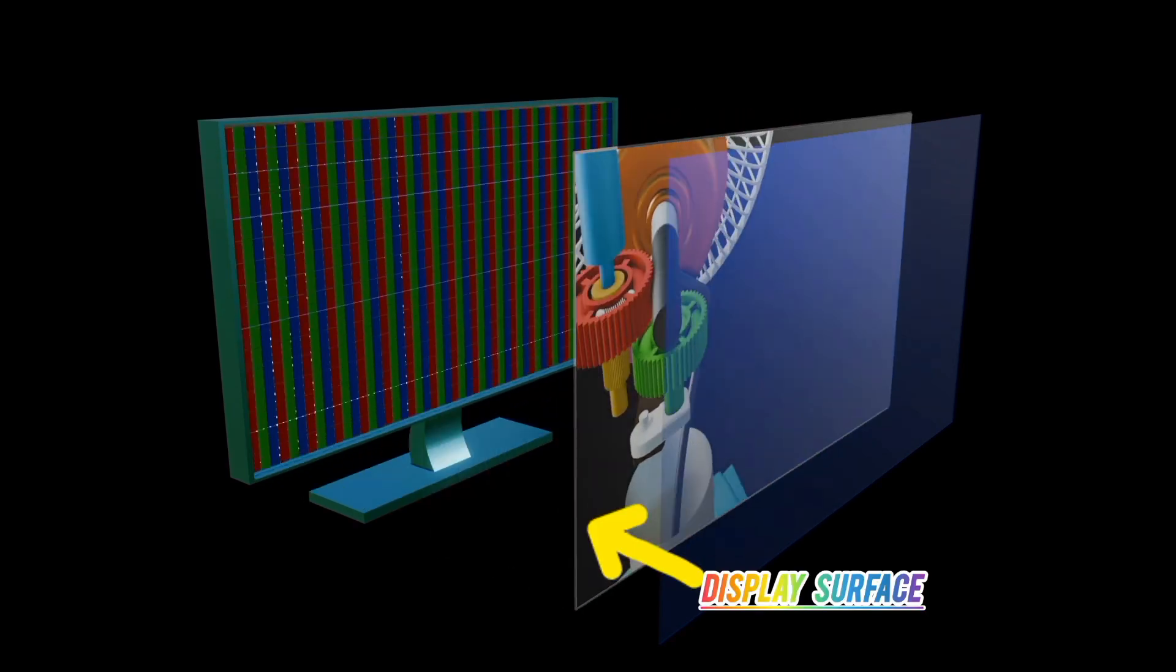This is a protective layer. Next we have a display surface. This is the outermost visible part of the display surface.